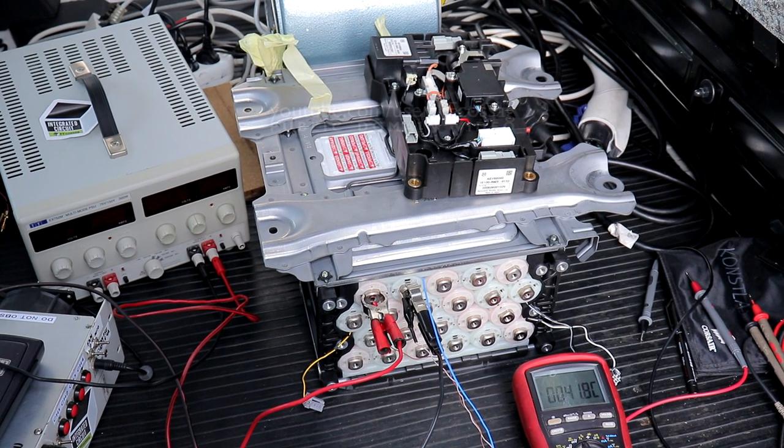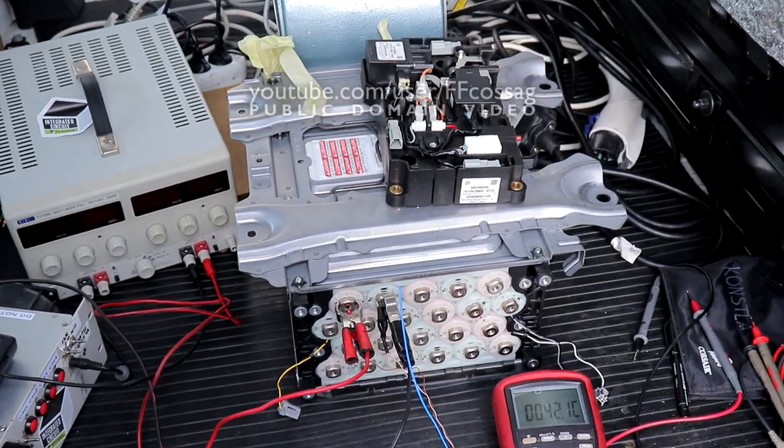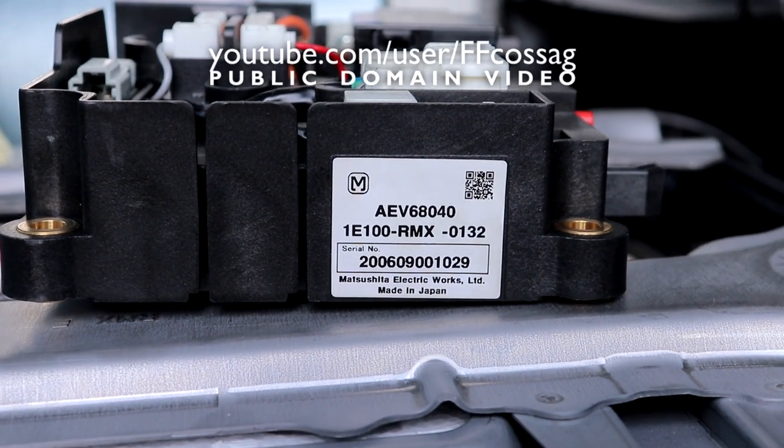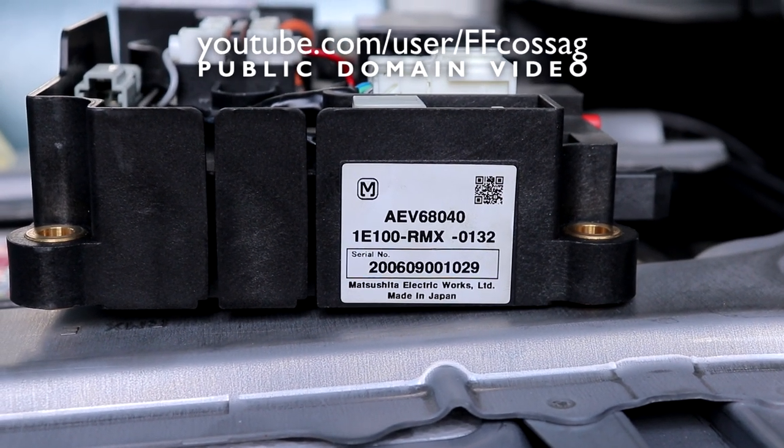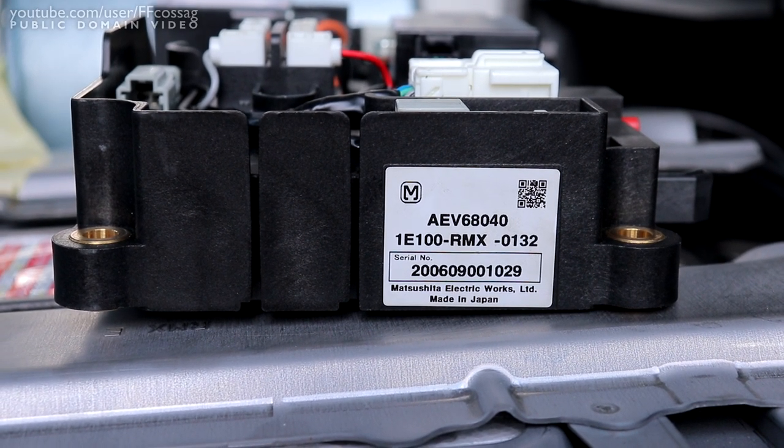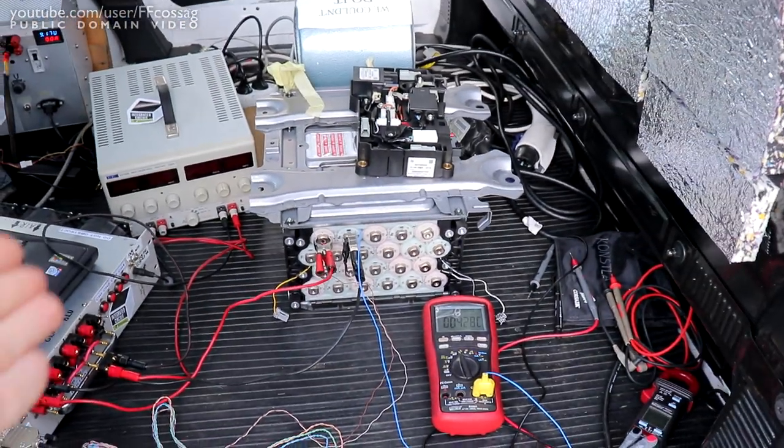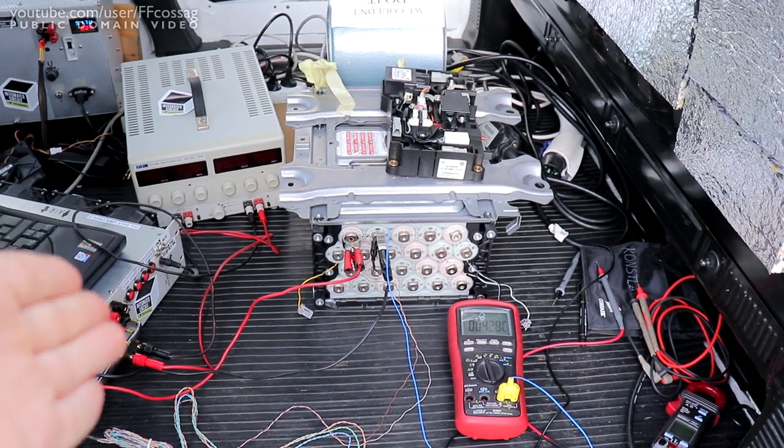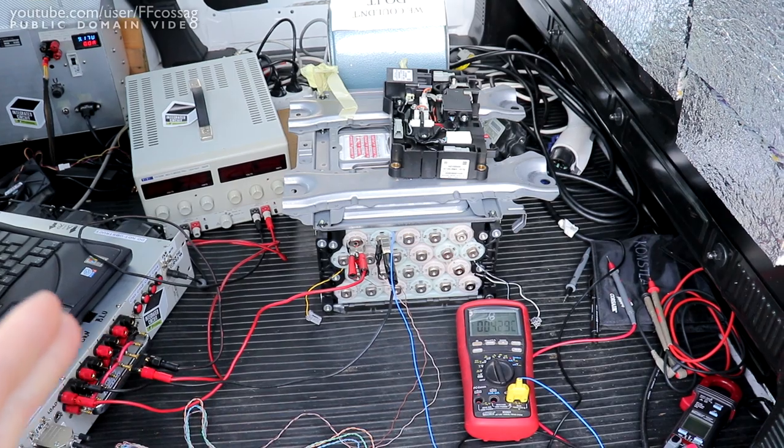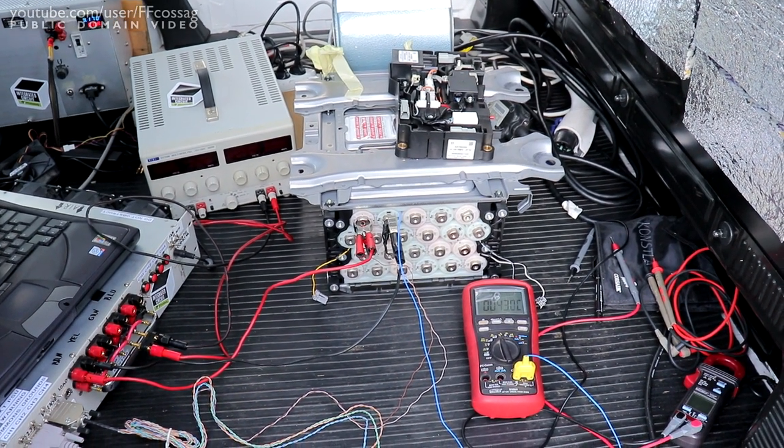This is a battery out of a 2007 Honda Civic IMA, one of those early hybrid type vehicles. If you have one of these and your IMA light comes on, this is a reasonable suspect because these batteries go bad over time. They are in fact notorious for it. I have just restored this battery from about 20% capacity up to about 80% capacity without replacing any cells.